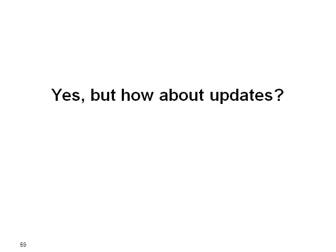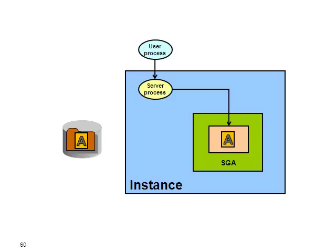But how about updates? Typically it's your server process that is responsible for modifying the data. So as a user when you issue an update, the server process is going to modify the data directly in the SGA — in the buffer cache in this case. And from time to time you have a special dedicated background process called the database writer, whose responsibility is to flush the modified data back to the disks. The important thing to realize here is that it's done in a desynchronized way.